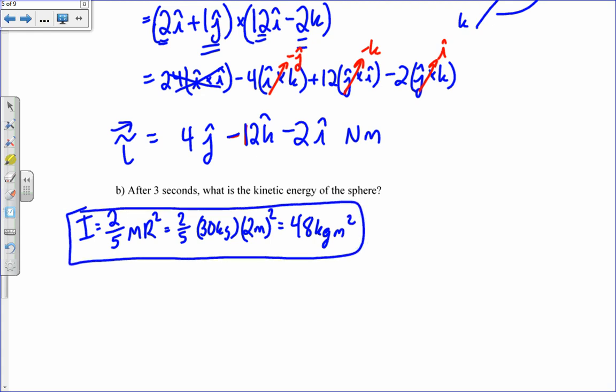You had to find the magnitude of the torque. There are a couple different ways you could do this, but this is probably the easiest. Use the Pythagorean theorem. That's 4 squared plus 12 squared plus 2 squared. That's finding the magnitude of that torque vector. You get 12.8 newton meters.